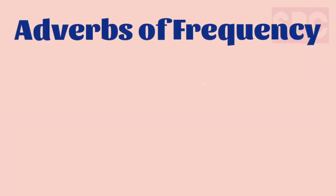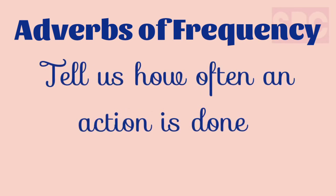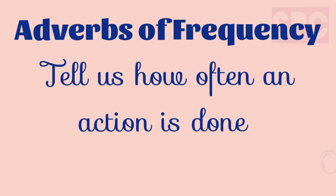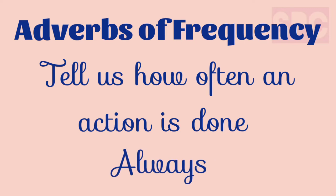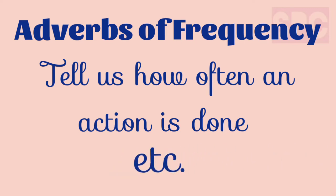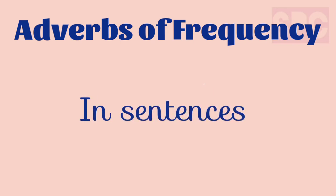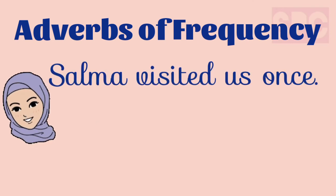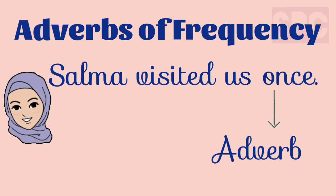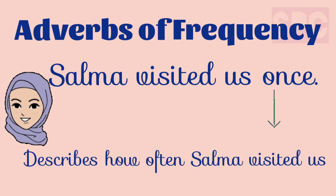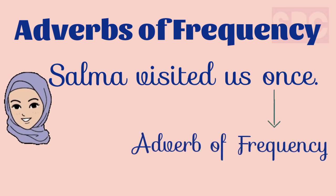Let's move on to adverbs of frequency. Adverbs of frequency tell us how often an action is done. For example: twice, again, once, often, always, etc. First example: Salma visited us once. In this sentence, the adverb 'once' describes how often Salma visited us. So, 'once' is the adverb of frequency.